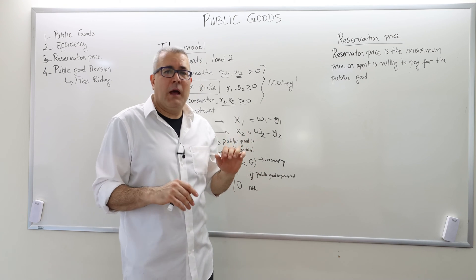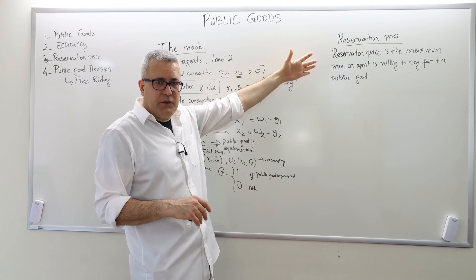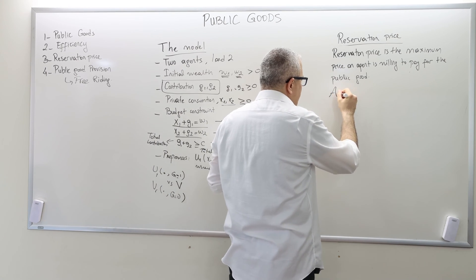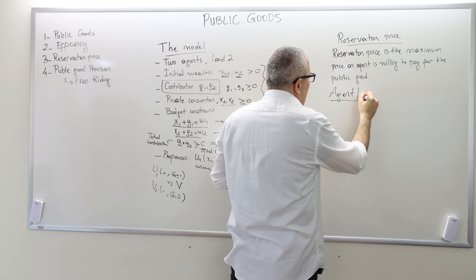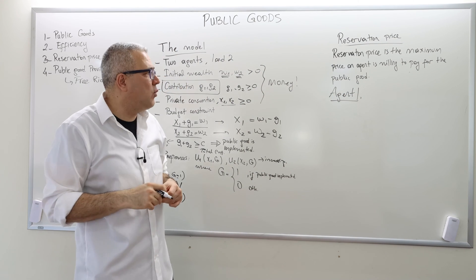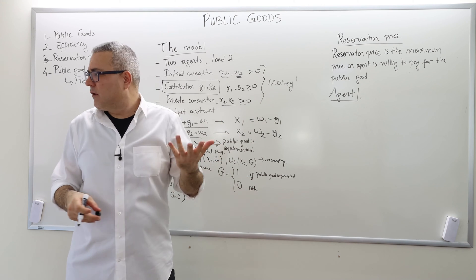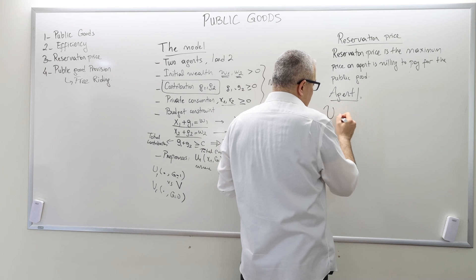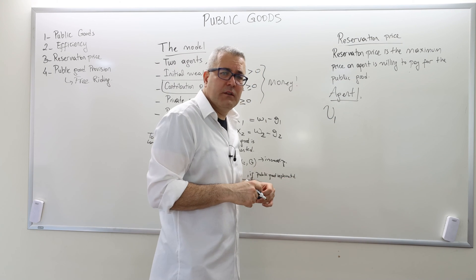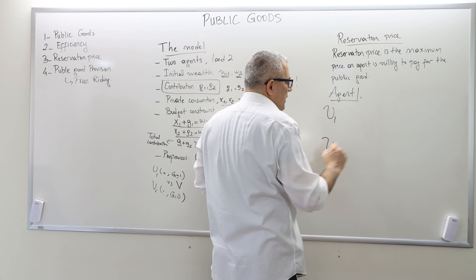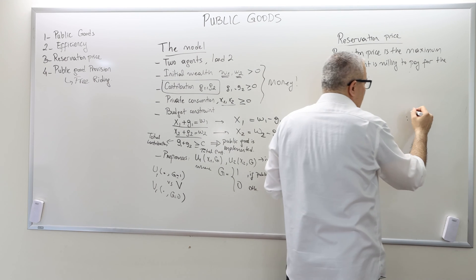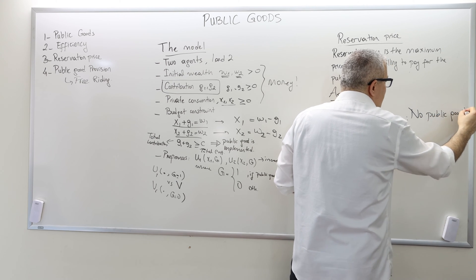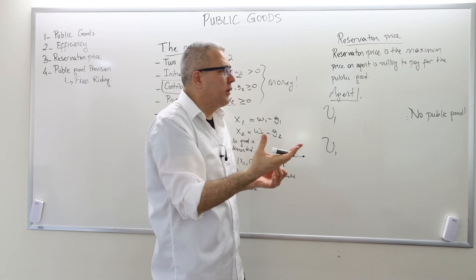In order to calculate the reservation price of an agent, we first need to pick an agent. Let's say I'm going to calculate the reservation price of agent one — everything is going to work the same for agent two. So here I have to compare his utility function in two scenarios. In the first scenario, as I said, no public good. So he doesn't want to pay for the public good.